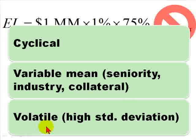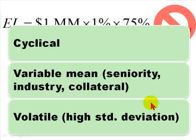This is the most important justification for the use of a distribution on the loss given default: when we look at the statistics, they have high standard deviations or high dispersions. So now let me show you in Excel the beta distribution, which is the most typical among the credit risk models used to model loss given default.